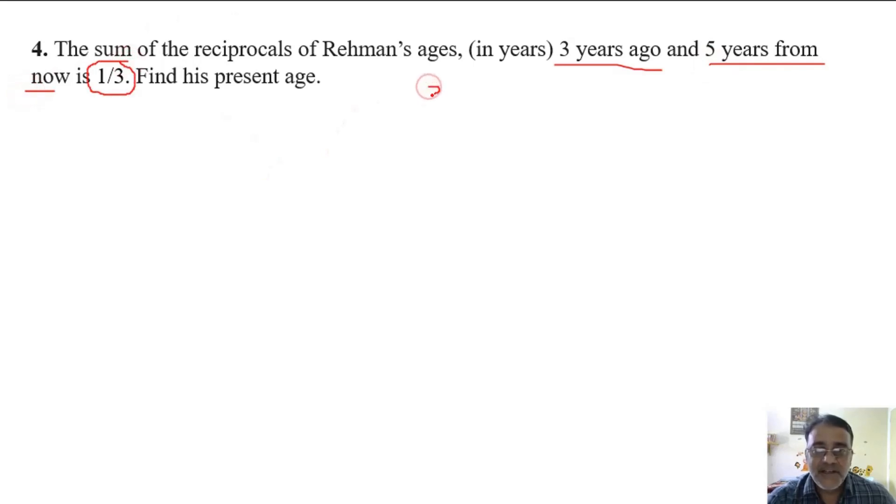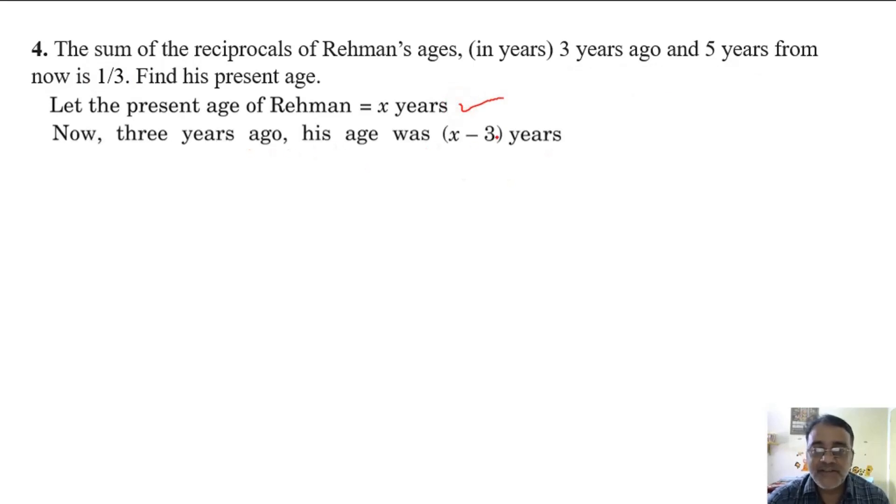Suppose the present age is x. What is his age 3 years ago? And 3 years from now? So let the present age of Rahman equal x years. So 3 years ago his age will be x minus 3, and 5 years from now his age will be x plus 5.